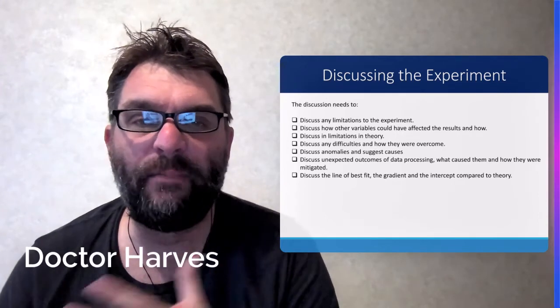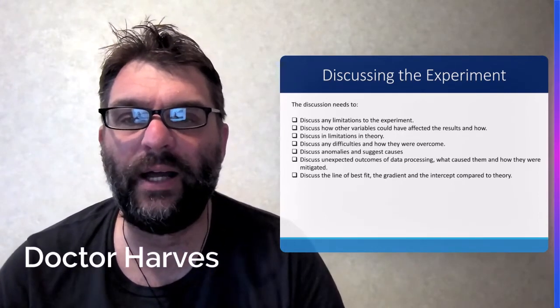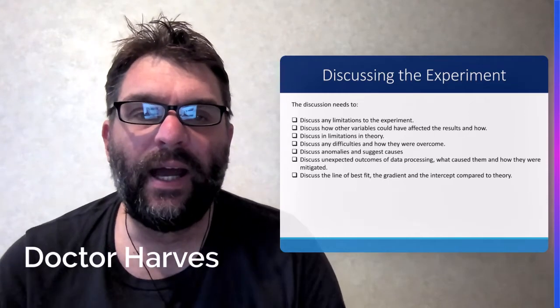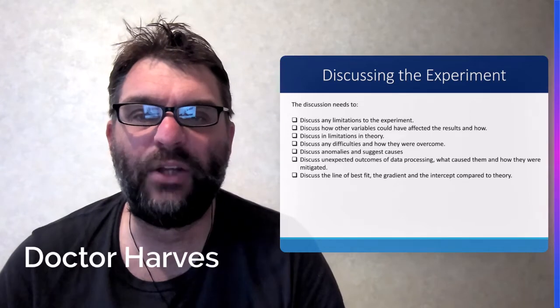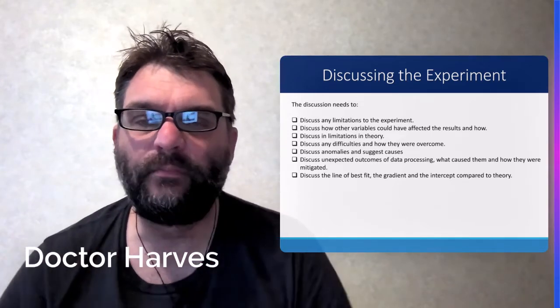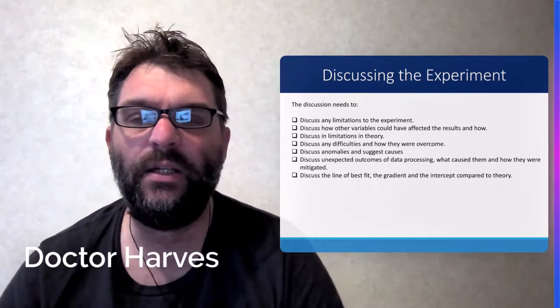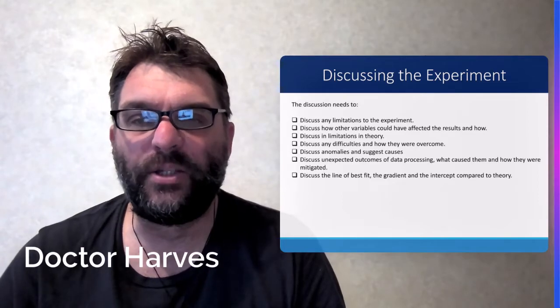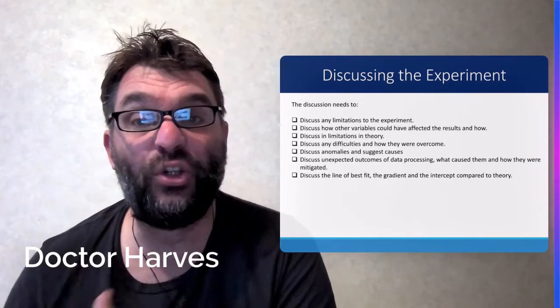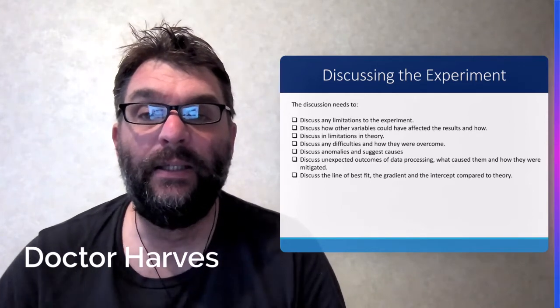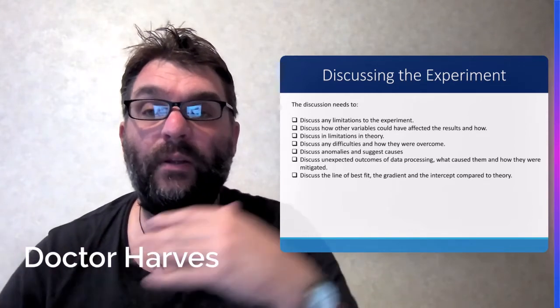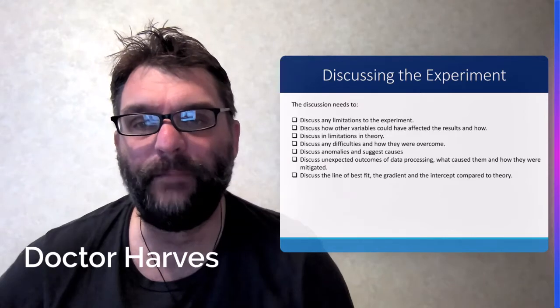And then discussing the line of best fit for your linear graph, and the gradient of that graph, and the intercept, and how they compare to theory. So you have an equation, which you have now created from your experiment, and how that links to the equation from theory, which you will have in your actual beginning papers that you'll be given at the start.